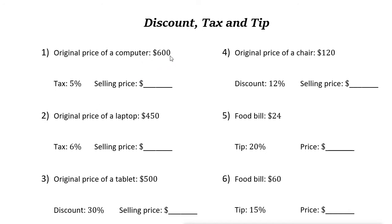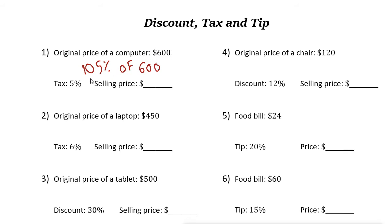You need to find five percent of six hundred and then add it to six hundred. Or you can simplify: find one hundred and five percent of six hundred. That's the selling price, because five percent tax plus one hundred percent for the six hundred dollars equals one hundred five percent of six hundred dollars.